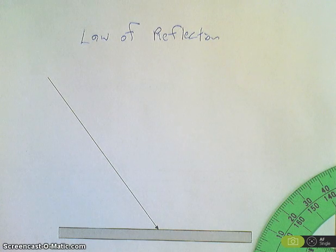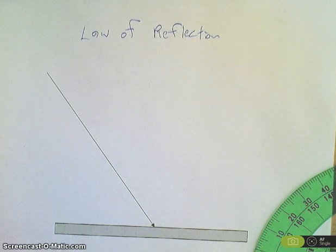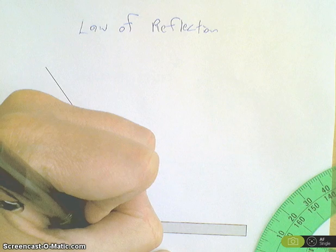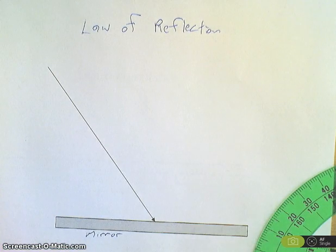So if I had a light beam coming in from this direction, reflecting off of a mirror, which is represented by this dark line here, what would the path of light do?